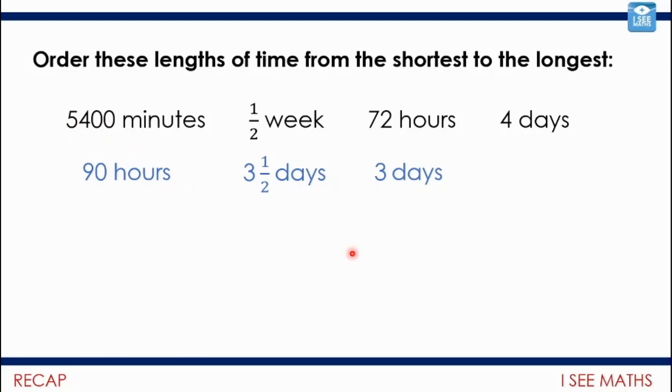Now I can maybe start comparing. Three days looks like the smallest. Now remember 72 hours and 90 hours are not the same—90 hours must be more than this. This has got to be the smallest, then three and a half days. Then I've got to think, how does 90 hours fit in? 72 hours is three days. 90 hours, well that's another 18 hours from three days. 18 out of 24 hours is three quarters of a day.